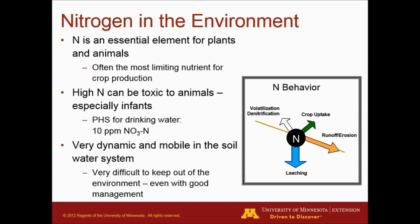Nitrogen is very dynamic and very mobile in the soil. It can be difficult to keep out of the environment, even with very good management. There might be some losses related with leaching and with volatilization, for example. The chart on the right is showing how nitrogen compounds can be taken up by the crop. Some might be exposed to runoff or erosion, some compounds might be denitrified or volatilized to the environment, and some are going to be lost in the form of leaching.